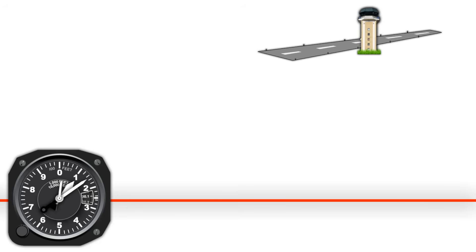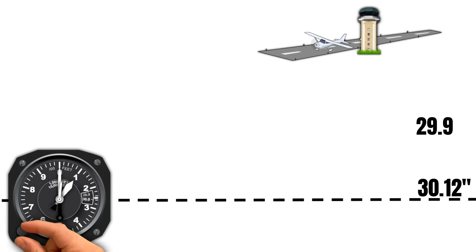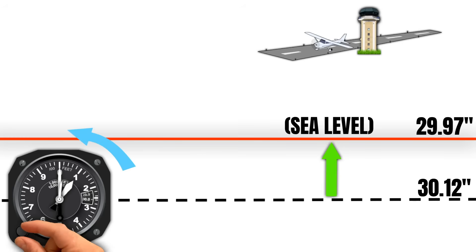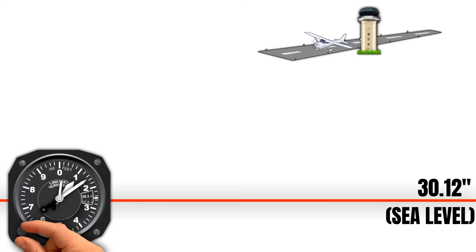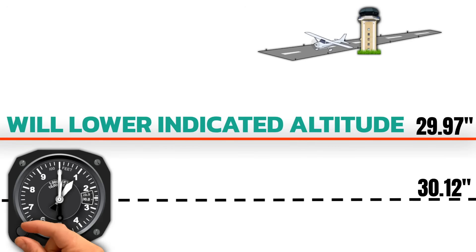Think back on our picture. Let's say I'm sitting at my airfield and I had 30.12 inches set into my altimeter. My airplane currently thinks that sea level is 30.12, but if I spin in 29.97 into the Kollsman window, sea level comes up to meet me at that lower air pressure. While this is happening, my indicated altitude is decreasing because I'm getting closer to sea level. Just remember that spinning in a lower altimeter setting will also lower your indicated altitude.